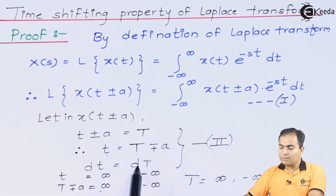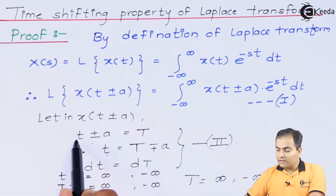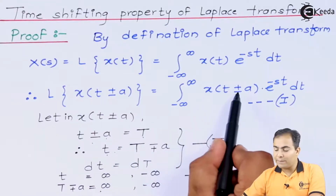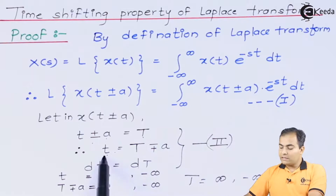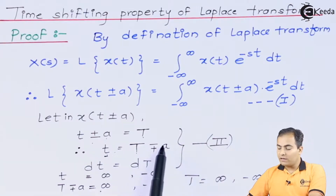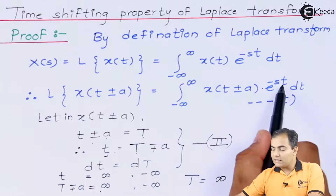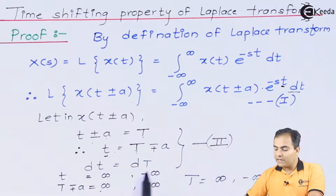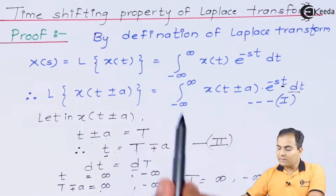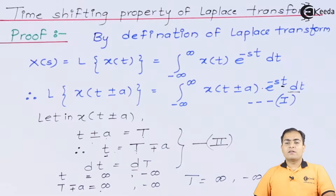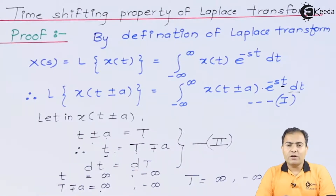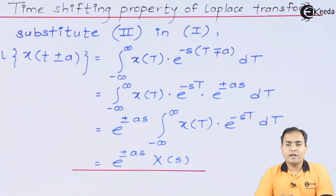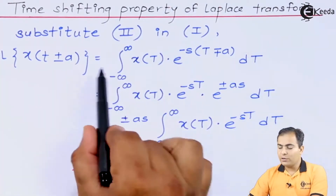I will substitute all these parts into equation number two. This means x(t ± a) is replaced by capital T, so we write capital T here. This t is replaced by T ∓ a here as well. The dt is replaced by capital dT, and the integration limits remain the same. Now after substitution, let's see the result.